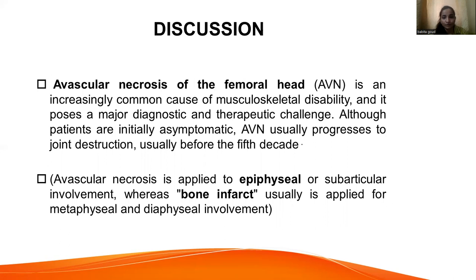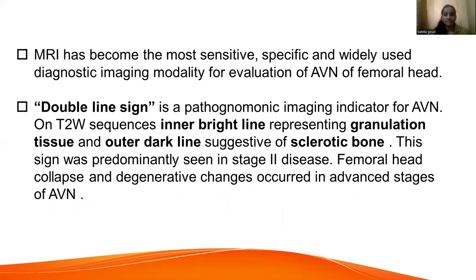In discussion: avascular necrosis of the femoral head is an increasingly common cause of musculoskeletal disability and poses a major diagnostic and therapeutic challenge. Although patients are initially asymptomatic, AVN usually progresses to joint destruction before the fifth decade. MRI has become the most sensitive, specific, and widely used diagnostic imaging modality for evaluation of AVN. The double line sign is a pathognomonic imaging indicator for AVN — on T2-weighted sequences, an inner bright line represents granulation tissue and an outer dark line is suggestive of sclerotic bone. This sign is predominantly seen in stage two disease, and femoral head collapse and degenerative changes occur in advanced stages.